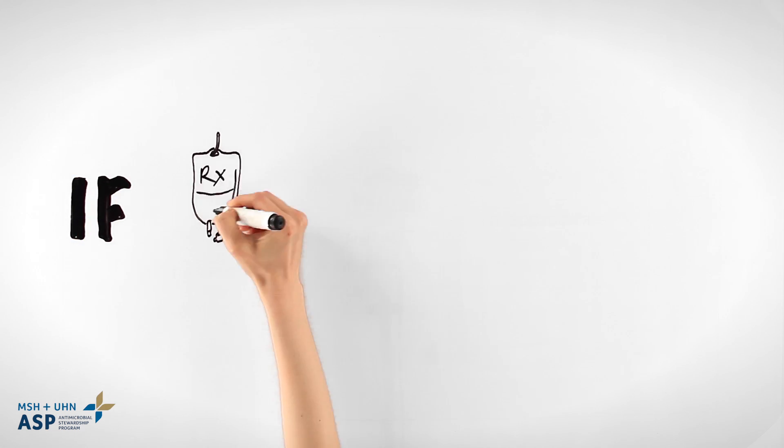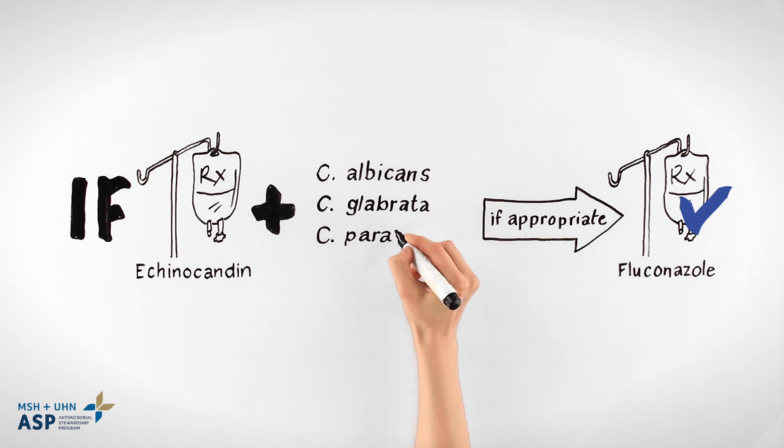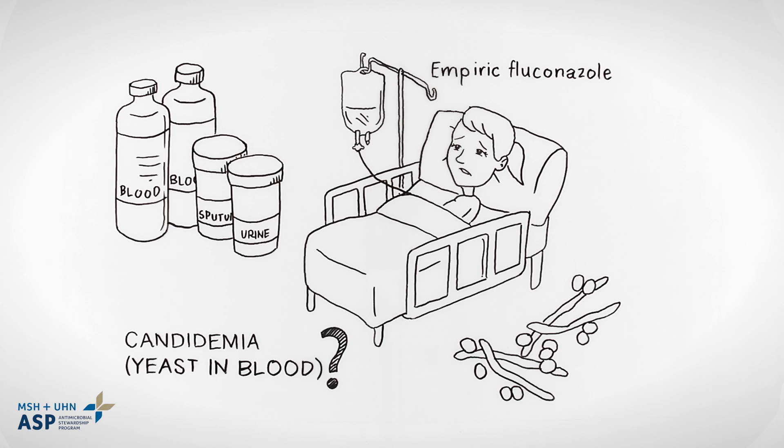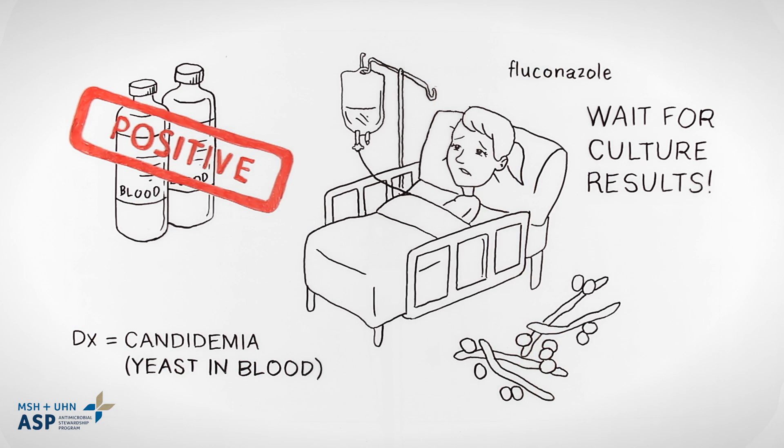If an echinocandon is started, switch to fluconazole if appropriate once the candida species is confirmed. For C.A., wait for blood cultures to come back before starting fluconazole.